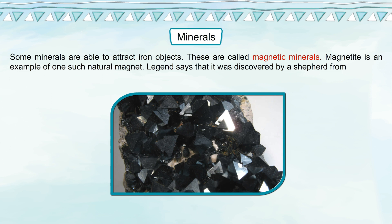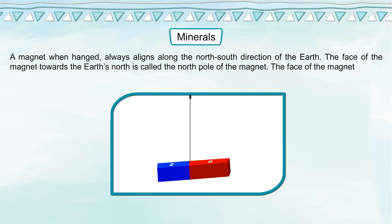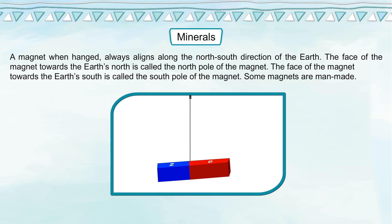Legend says that magnetite was discovered by a shepherd from Greece named Magnus. A magnet, when hung, always aligns along the north-south direction of the earth. The face of the magnet towards the earth's north is called the north pole of the magnet, and the face towards the earth's south is called the south pole. Some magnets are man-made.